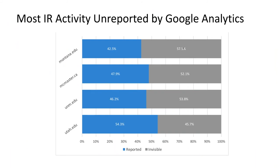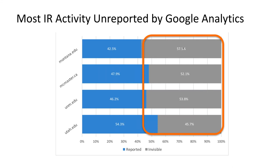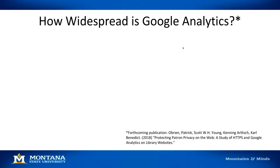What we discovered in our research is that most IR activity goes unrecorded by Google Analytics. We are showing data here from four repositories: Montana State University, McMaster University, University of New Mexico, and the University of Utah. We'll talk more about that data in a moment.